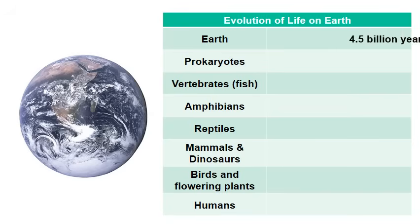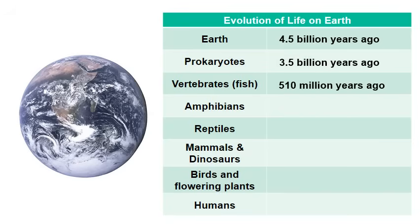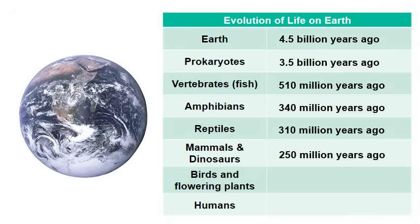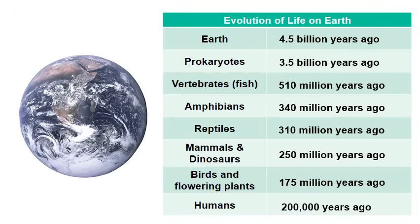In conclusion, it is because of radiometric dating that we can say the Earth is about 4.5 billion years old and that humans have been around for about 200,000 years. By studying the decay of isotopes left behind in fossils and rocks, we can accurately estimate the ages of particular samples.